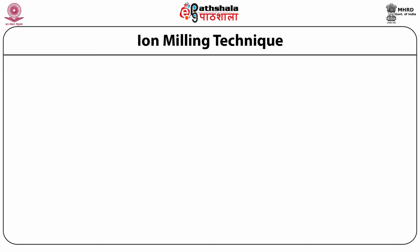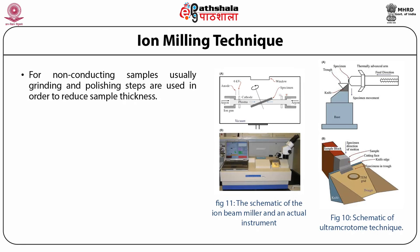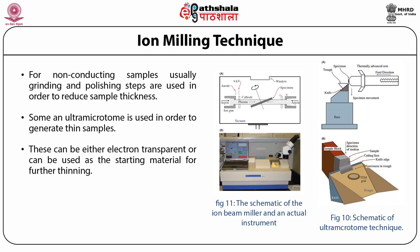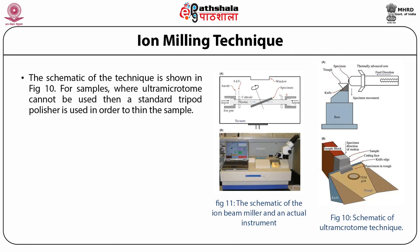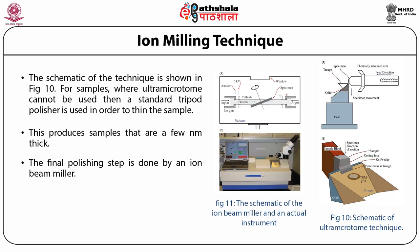The second technique is ion milling. For non-conducting samples, grinding and polishing steps are used to reduce sample thickness, and an ultra-microtome is used to generate thin samples that are either electron transparent or serve as starting material for further thinning. For samples where ultra-microtome cannot be used, a standard tripod polisher is used to thin the sample to a few nanometers thick, and the final polishing step is done by an ion beam miller.